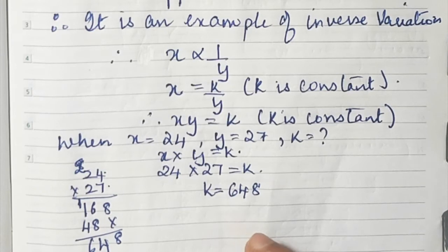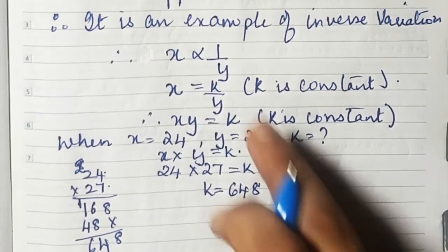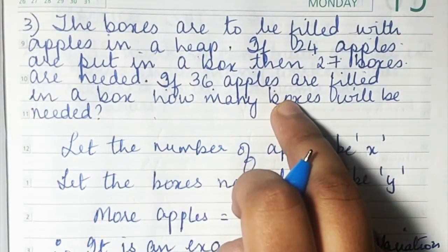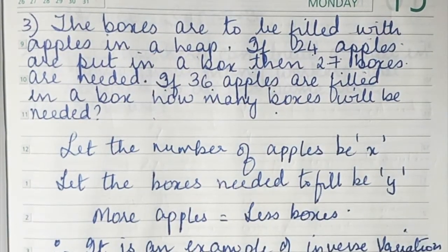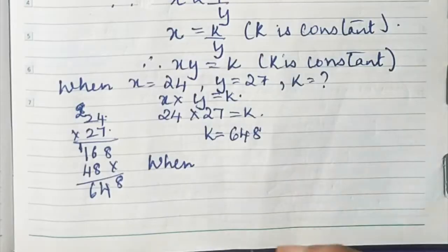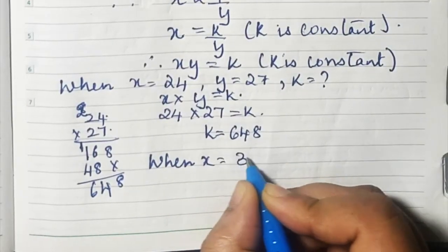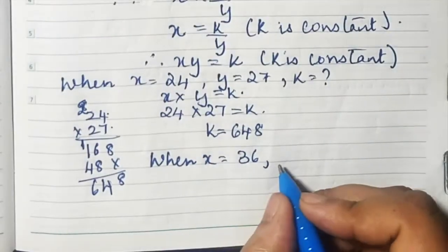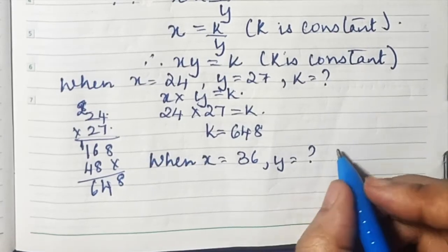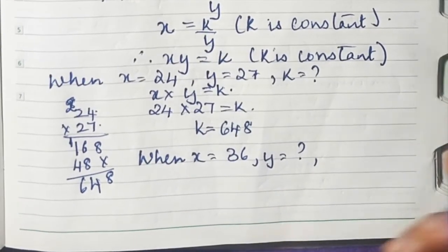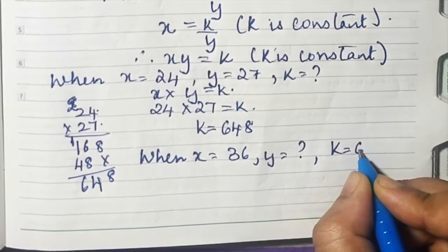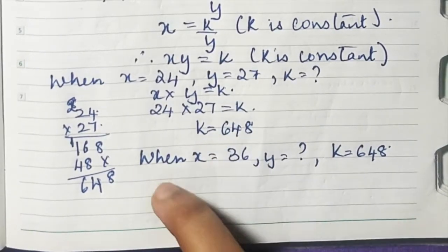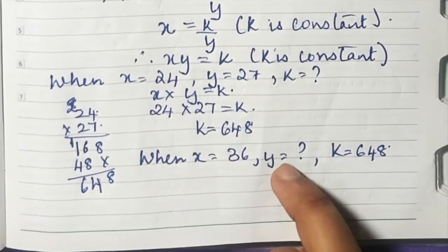Now k, the constant, is 648. They are asking: if 36 apples are filled, that means x is equal to 36, how many boxes will be required — that is, y equals how much? We know k is 648. We'll use that constant value to find y.